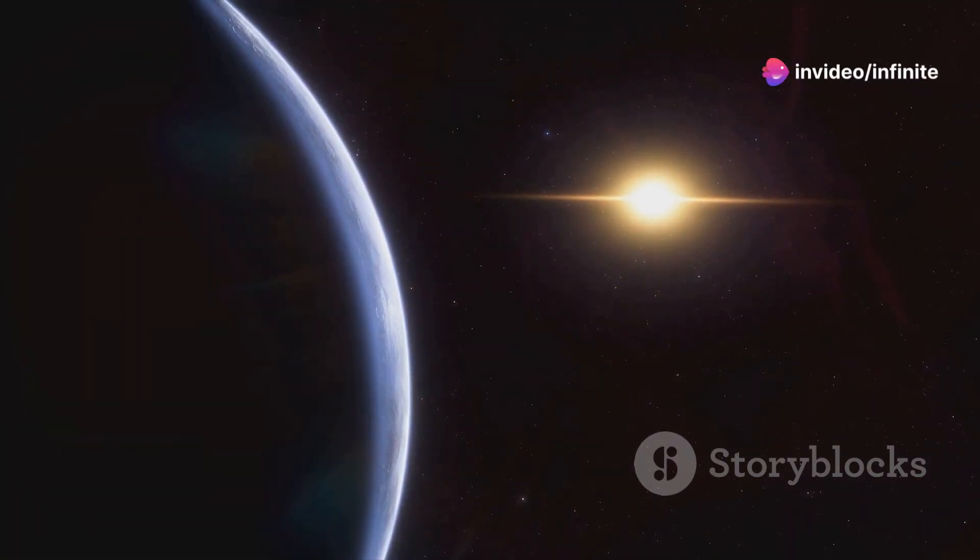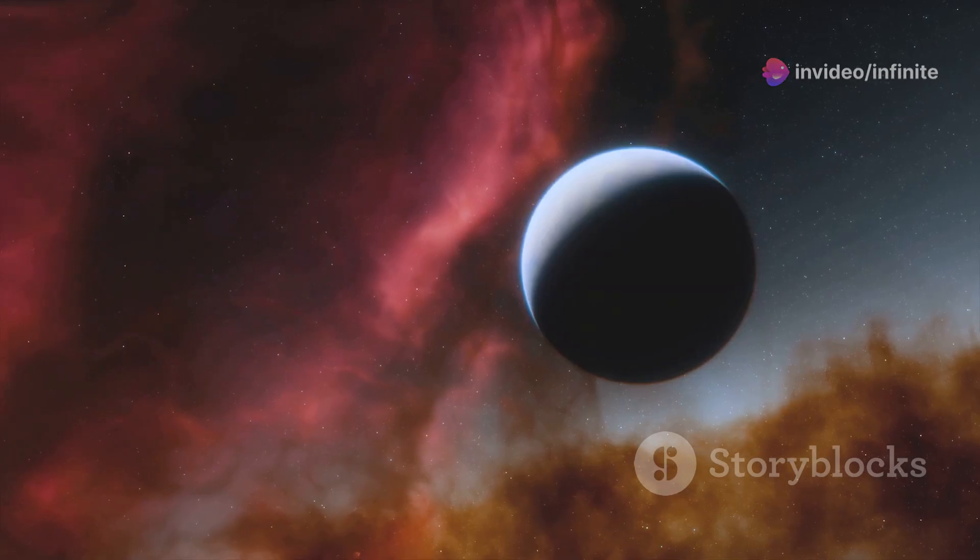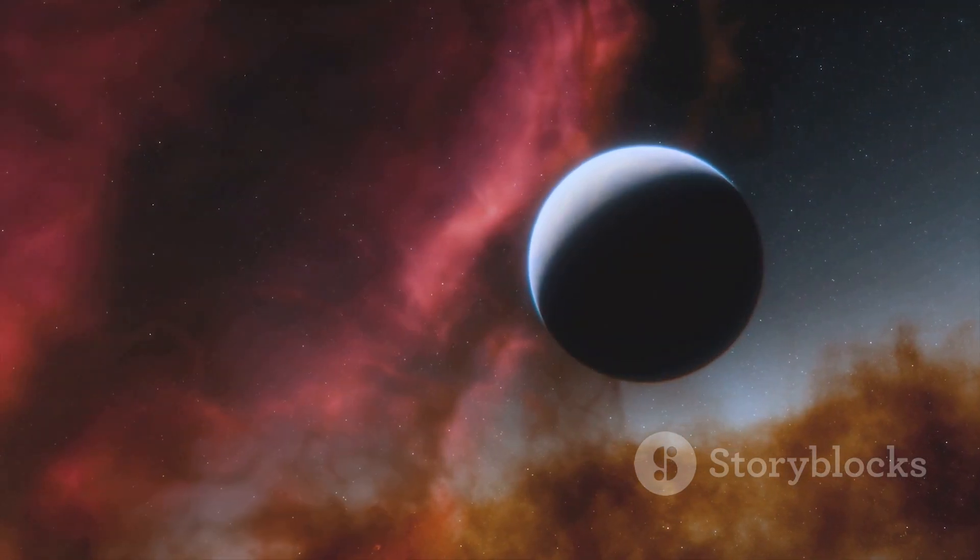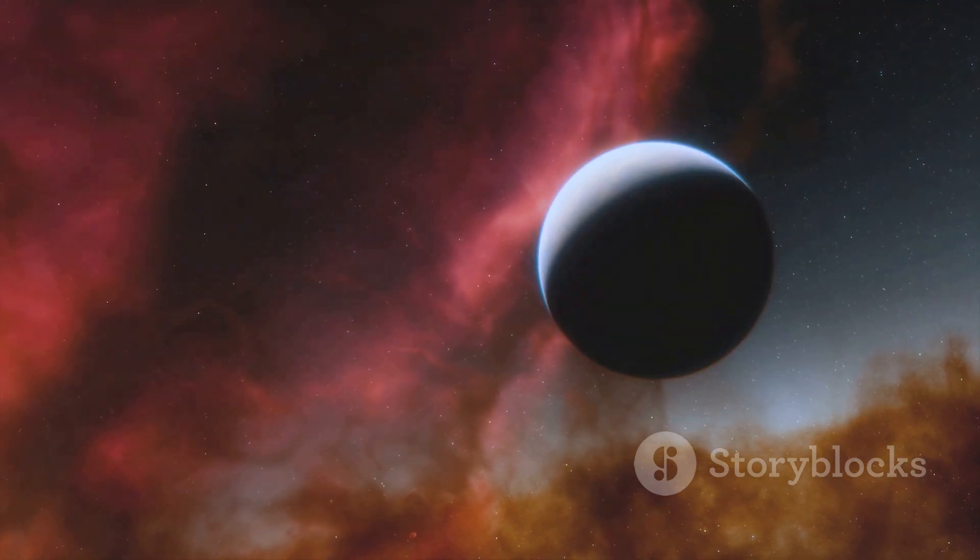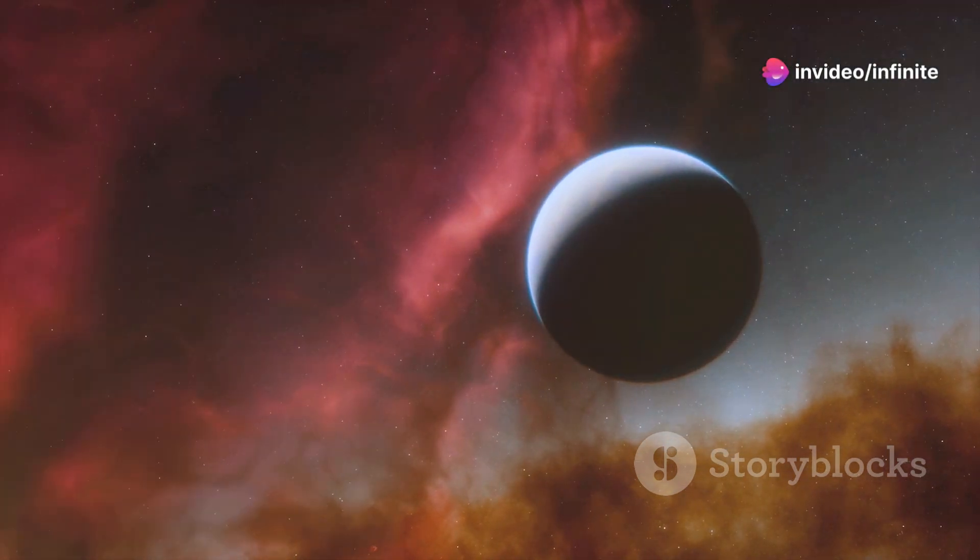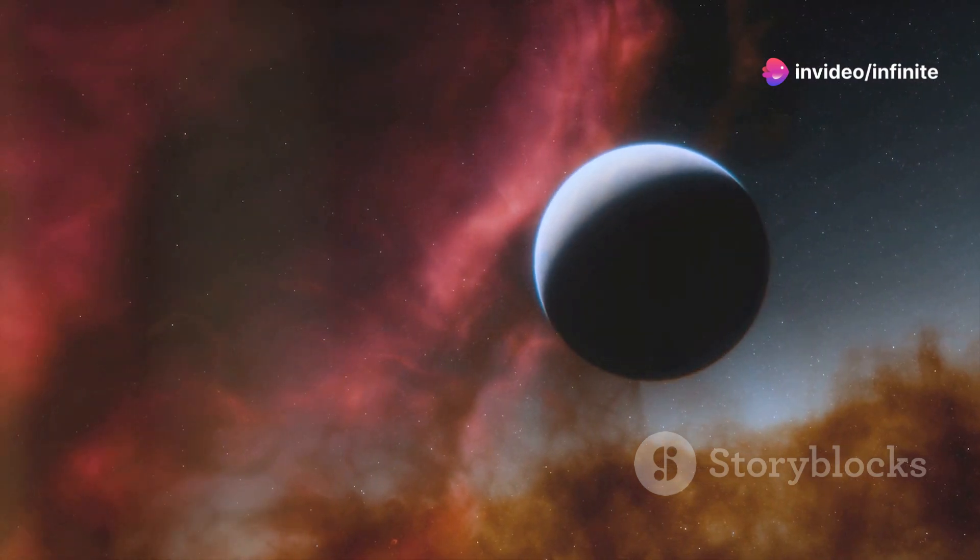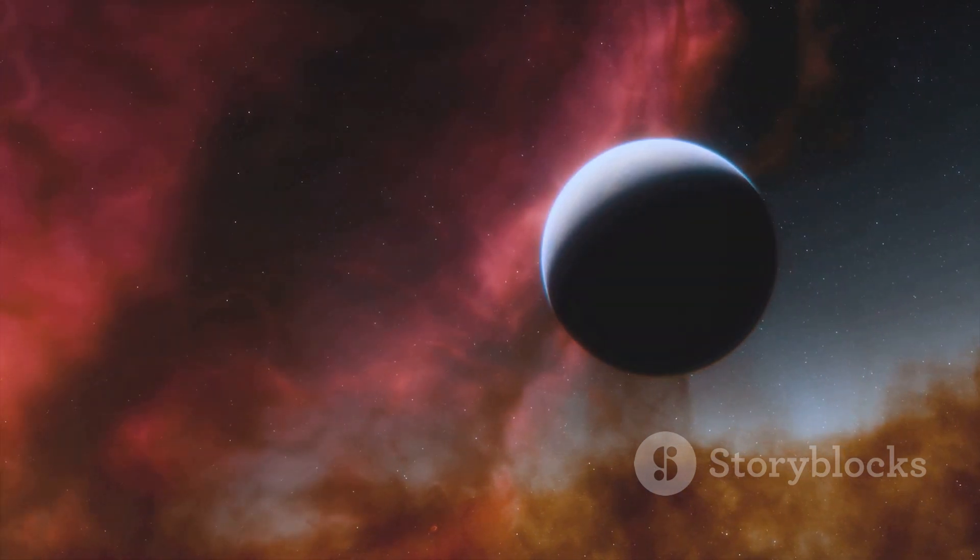This exoplanet is located in the habitable zone of a distant star, a region where conditions might be just right for life to exist. The habitable zone, often referred to as the Goldilocks zone, is neither too hot nor too cold, allowing for the possibility of liquid water.